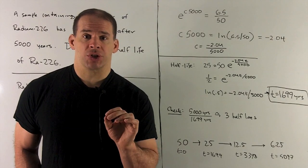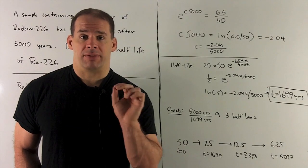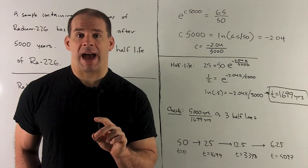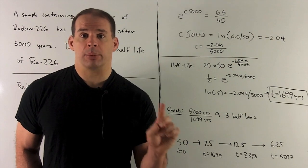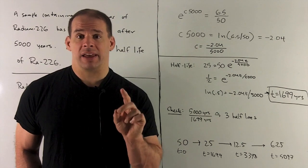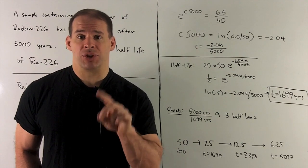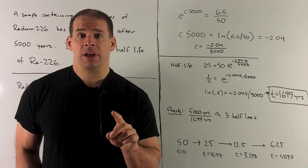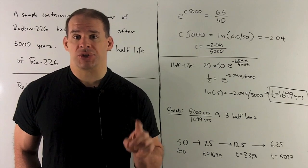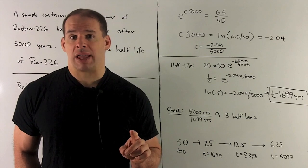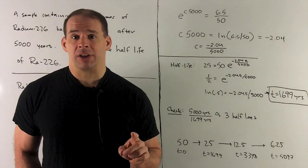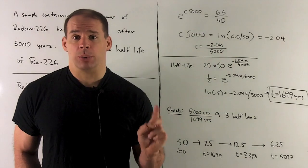We move the 50 to the other side. I have an equation with an exponential in it, so I'm going to apply natural log to both sides. Natural log of e to the anything collapses to your anything, so I have 5,000c on one side. The other side is natural log of 6.5 over 50. Going to my calculator, I get minus 2.04.